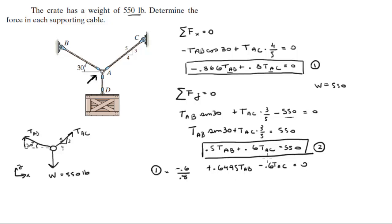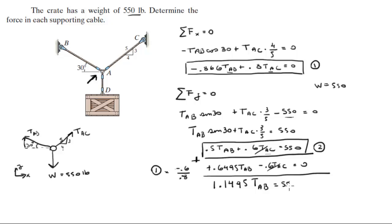Now we add the new Equation 1 with the old Equation 2. The positive 0.6 × T_AC and the minus 0.6 × T_AC cancel out. Adding everything up: 1.1495 × T_AB = 550, because 0.5 plus 0.6495 is 1.1495, and 550 plus 0 is 550. The tension AC terms cancelled, so now we have only one variable and we can solve for it.